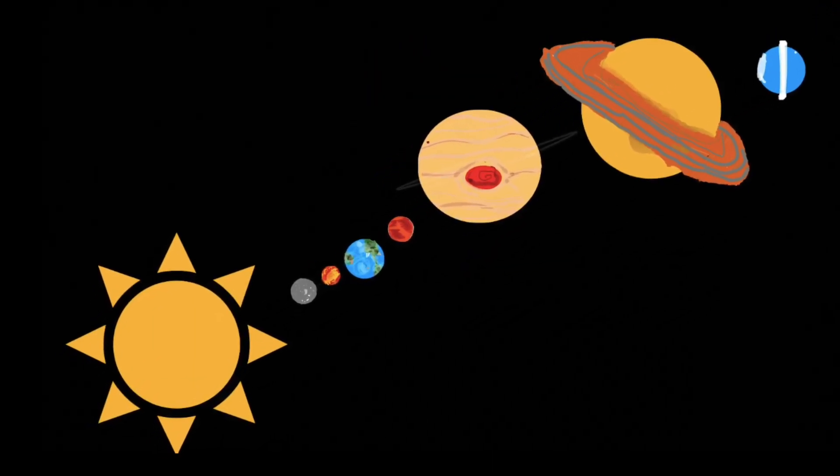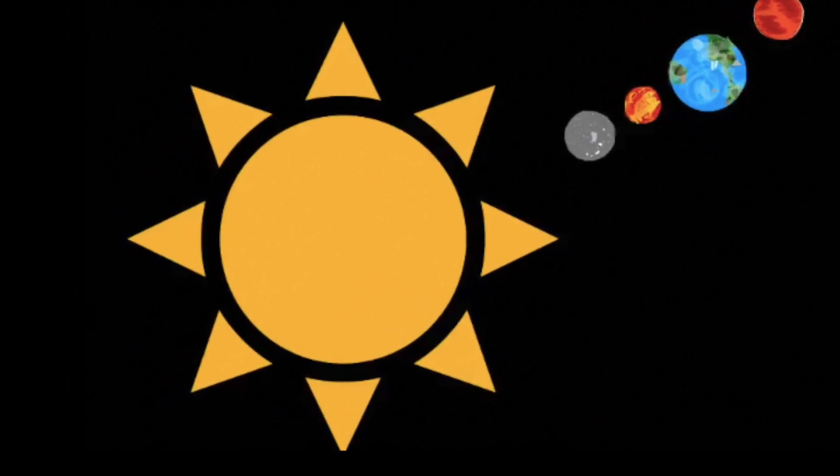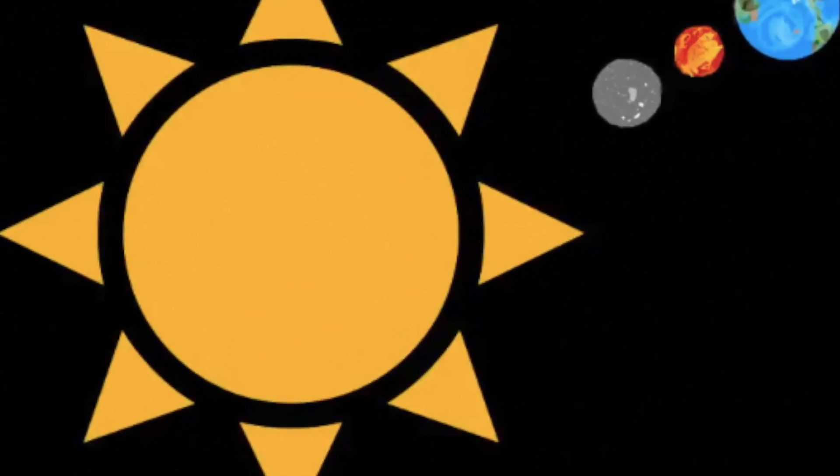The sun is a big star and it is made out of fire. Mercury is the closest and smallest planet.